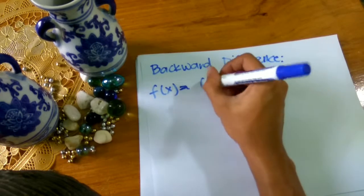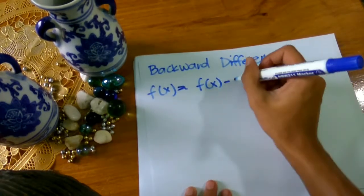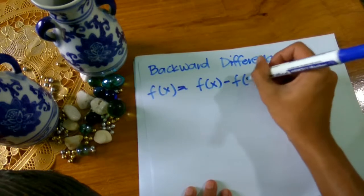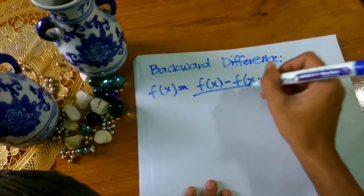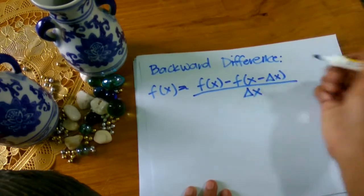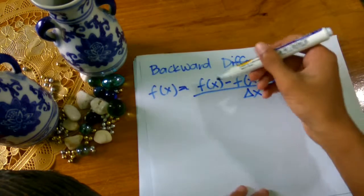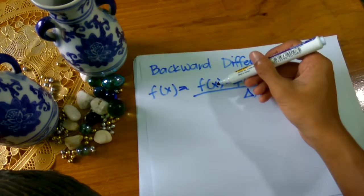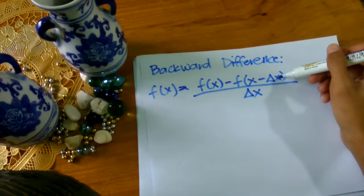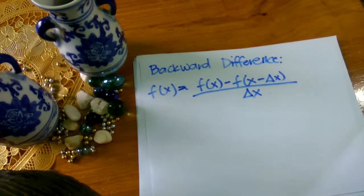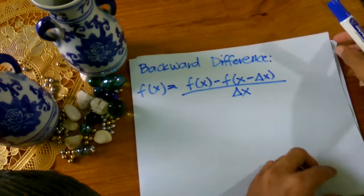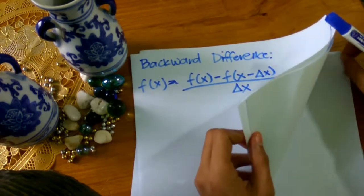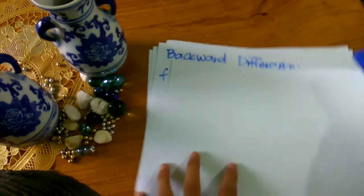The formula for backward difference is: f'(x) equals f(x) minus f(x minus delta x), all over delta x. So ang x dito is the point of interest, and delta x is the step size, same as in our forward difference. For us to understand more the backward difference, gamitin natin ang same na function kanina — the same given function.